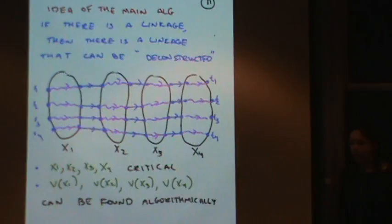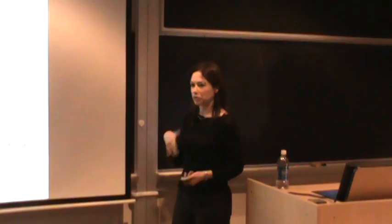Now it's theorems, not algorithms. Now it's theorems. I'm going to take a graph and I'm going to assume there is a linkage and I'm going to look at the shortest linkage — the linkage that uses the minimum number of vertices. And then I'll study its properties until I can extract an algorithm from it.